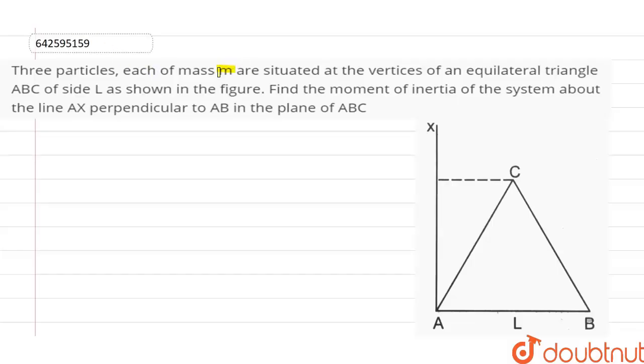Three particles, each of mass m, are situated at the vertices of an equilateral triangle ABC of side L as shown in the figure. Find the moment of inertia of the system about the line AX perpendicular to AB in the plane of ABC.